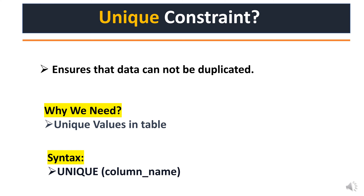Let's move on to our second important SQL constraint: unique key. Why do we use a unique key? Because it ensures that data cannot be duplicated in one table, and it ensures that data remains unique.